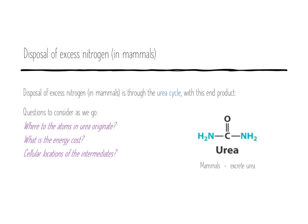In mammals, excess nitrogen has to get out of the body — it's very toxic. The way nitrogen leaves the body for mammals is this molecule called urea, which has two nitrogens, one on each side of the carbonyl, and once urea is made it gets excreted out. Key questions are: what's the source of each atom, what's the energy cost, and what are the cellular locations of the intermediates?